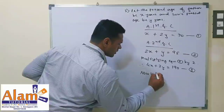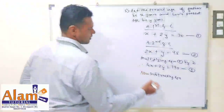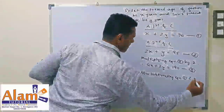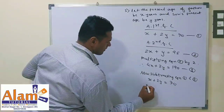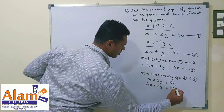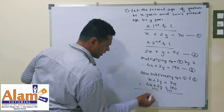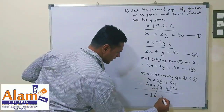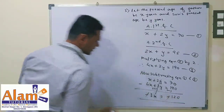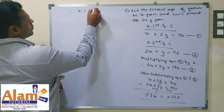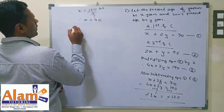Now subtracting equation 1 from equation 3: 4x plus 2y minus x minus 2y gives 3x, and 190 minus 70 gives 120. The 2y terms cancel, so 3x equals 120. Therefore x is equal to 120 divided by 3, which is 40. So x is equal to 40.